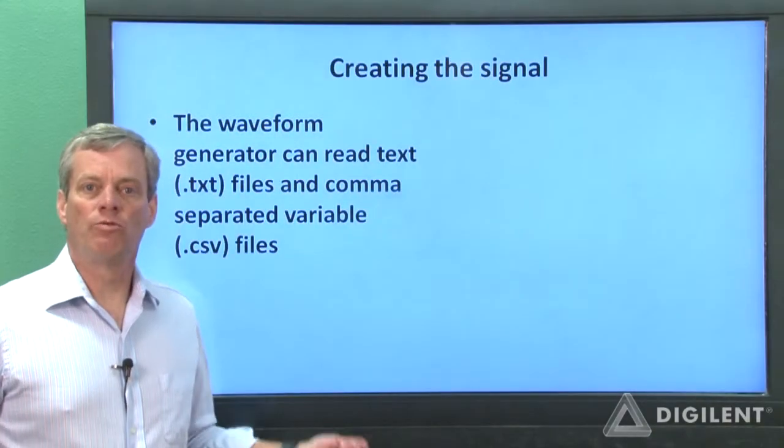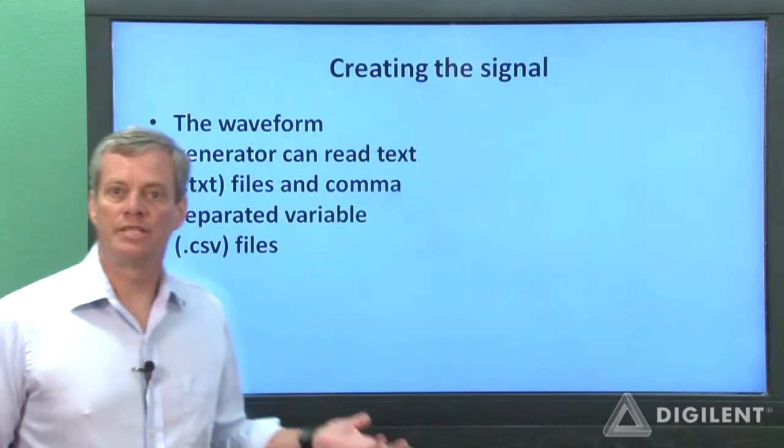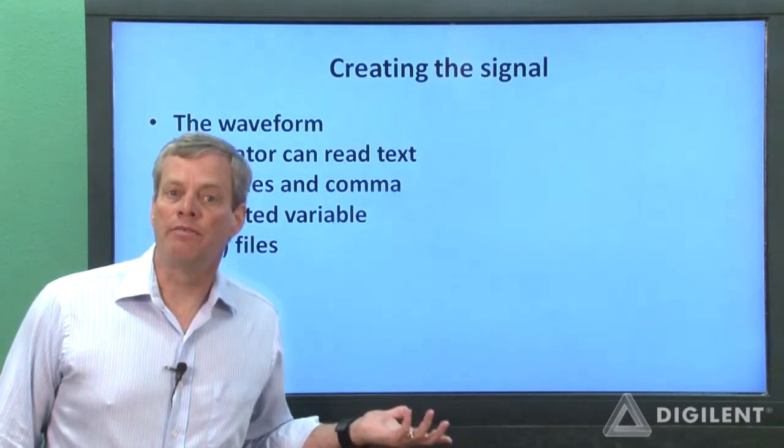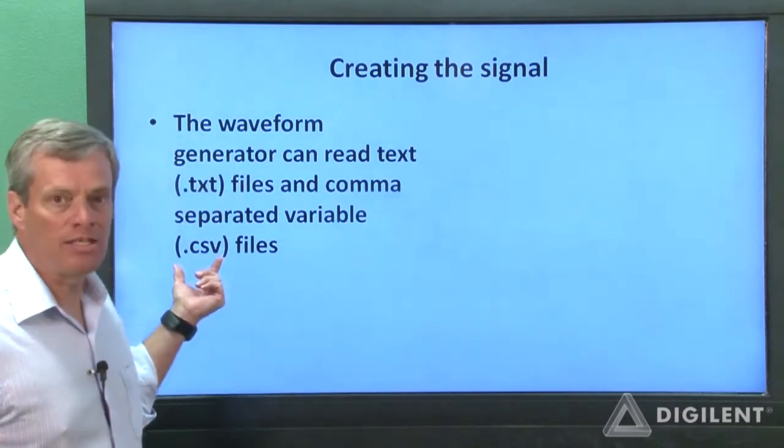The waveform generator can read data in the form of text data, which is usually saved in files with a .txt extension, and comma-separated variable data, usually in files with a .csv extension.